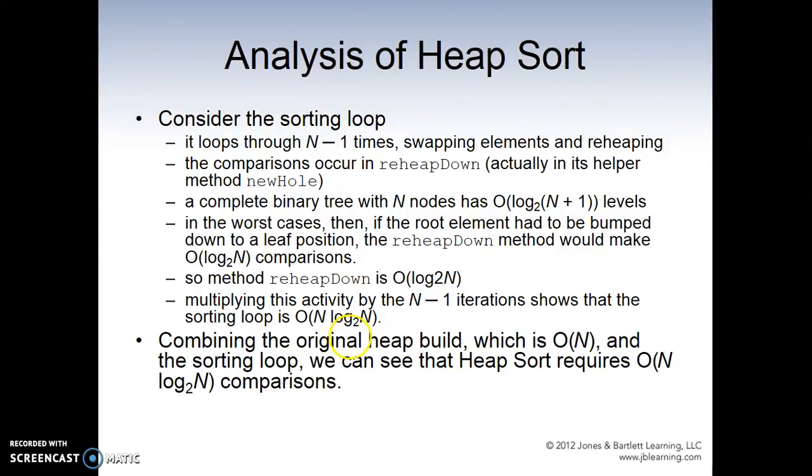So let's look at the analysis of heap sort. Consider the sorting loop. It loops through n minus 1 times swapping elements and reheaping. Comparisons occur in reheap down. A complete binary tree with n nodes has log n plus 1 levels. In the worst case, if the root element has to be bumped down to a leaf position, the reheap down method would make log n comparisons. So reheap down is about log n.